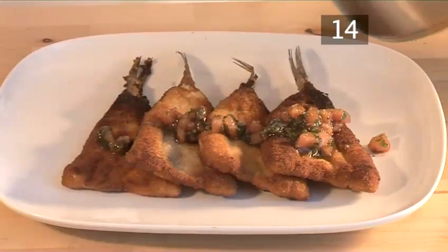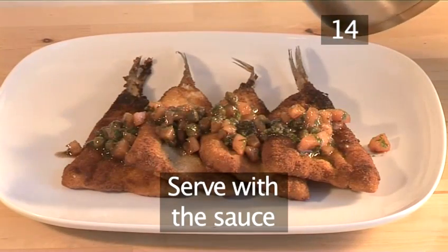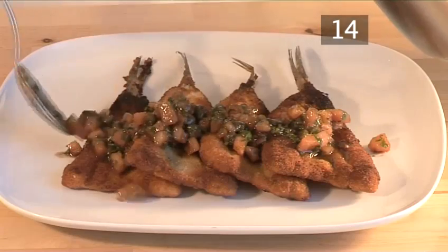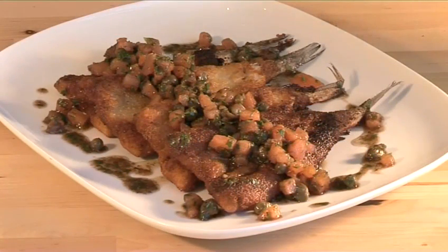Now all that remains is to serve the crispy whiting fillets topped with the caper sauce, or if you prefer, you can put the sauce into a serving jug for people to help themselves. And that is how to make crispy whiting with brown butter caper tomato sauce.